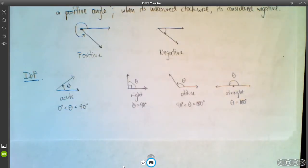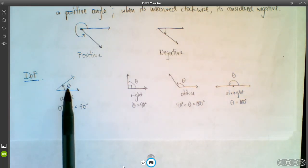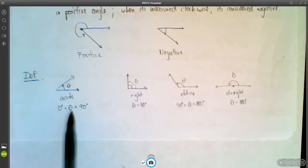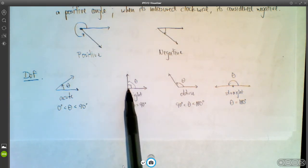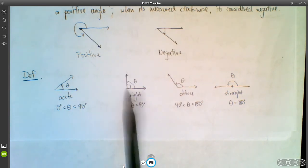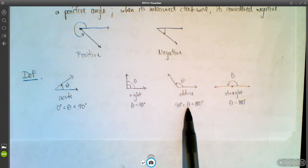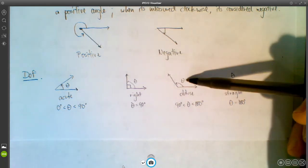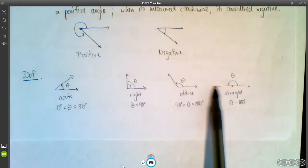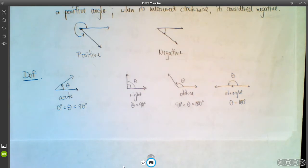Some more definitions we'll use throughout the class. If theta is between 0° and 90°, we call it acute. If theta equals 90°, it's a right angle — we use a little square symbol for that. If theta is between 90° and 180°, we call it obtuse. And if theta equals 180°, we call that a straight angle. If theta is bigger than 180°, there's no special name for that.